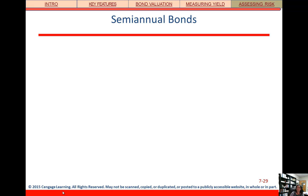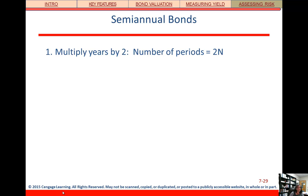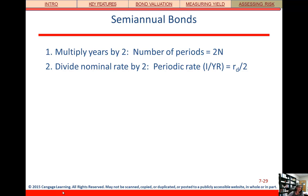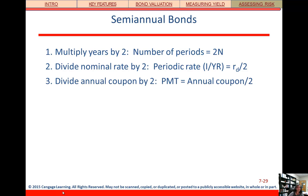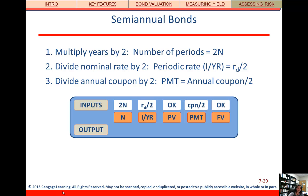Up to this point we've been talking about bonds with annual coupons. If we have semi-annual bonds, which is typically the case, we just need to adjust our inputs. We multiply the number of years by two to get the number of periods, divide the interest rate by two to get the periodic rate, and divide the payment by two to get the periodic payment.